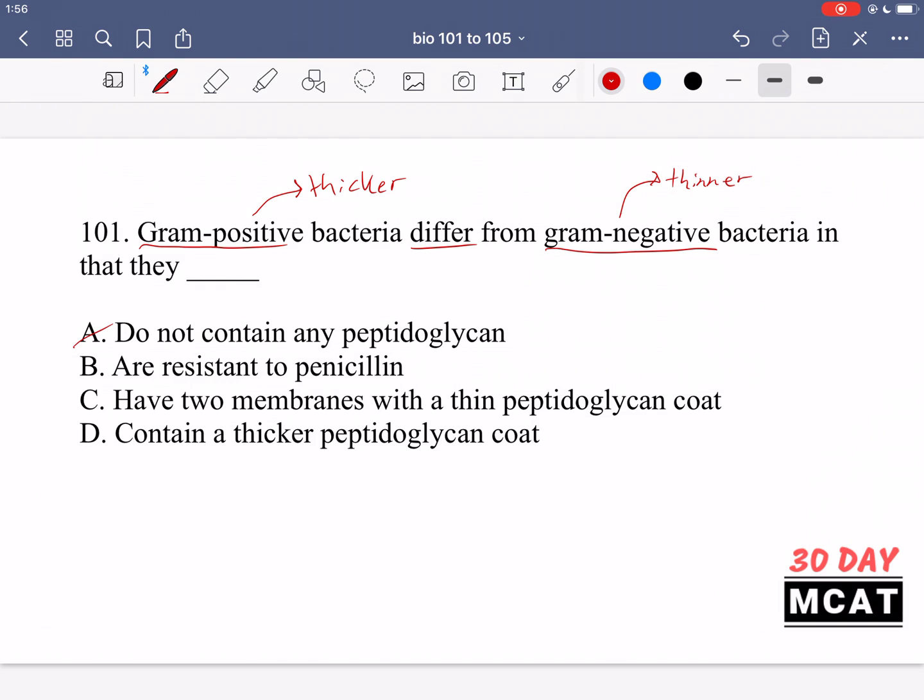Option A is saying that they do not contain any peptidoglycan? That's incorrect. Gram-positive actually contain more than gram-negative. B, that they're resistant to penicillin? No. These different strains don't make them resistant to antibiotics. C, have two membranes with a thin peptidoglycan coat? No, that's actually gram-negative. It's gram-negative which have two membranes, the inner and the outer, and they're the ones that have the thin peptidoglycan coat.